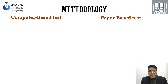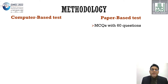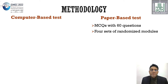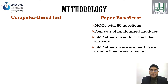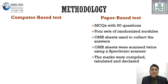Coming to both tests: for the paper-based test, we had a 60-question MCQ test which was randomized into four sets of modules. The students answered on an OMR sheet. These OMR sheets were then scanned twice using a Scantron scanner. The marks were then analyzed, compiled, tabulated, and declared.